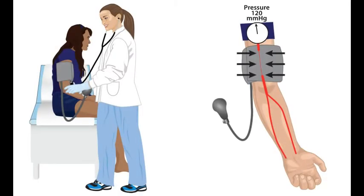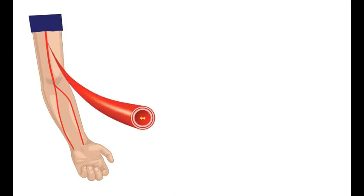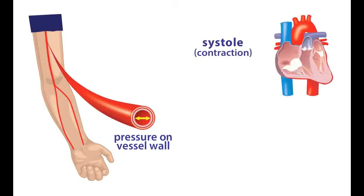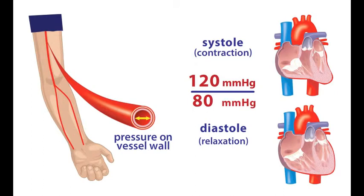Blood pressure is a measure of the force blood exerts against the wall of a vessel, in units of millimeters of mercury. Typical blood pressure is measured across the wall of an artery in the arm and is a reflection of high pressure after heart contraction — systole — and lower pressure with heart relaxation — diastole. Blood pressure is reported as systolic over diastolic and is normally around 120 over 80 millimeters of mercury.